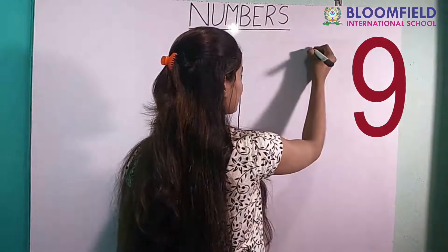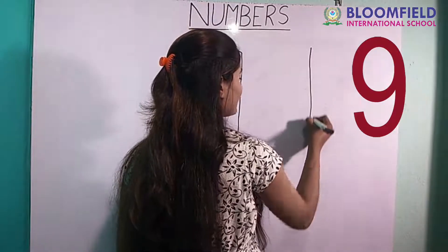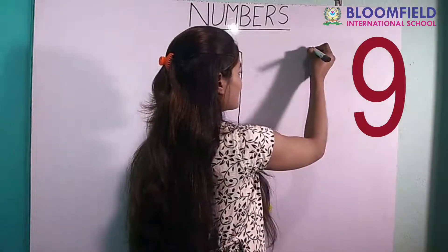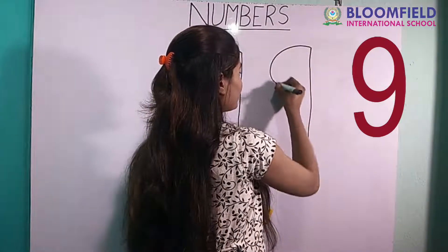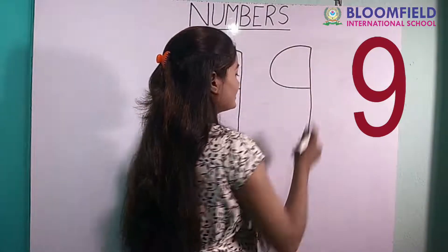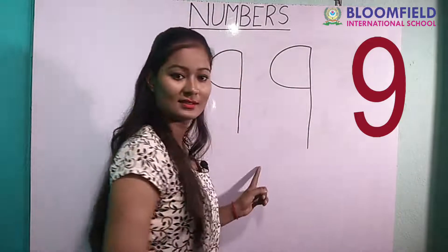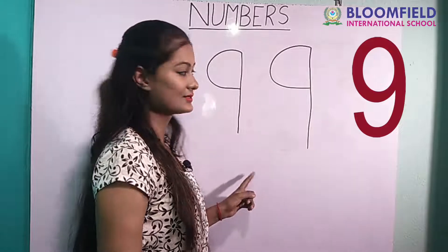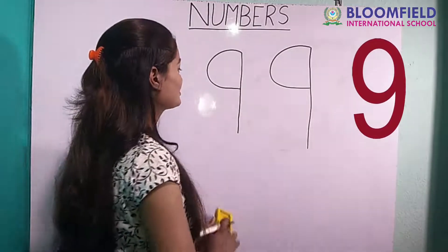Next: yes. Nine — standing line, then small curve. Nine. Standing line, then small curve. Nine. Very good.